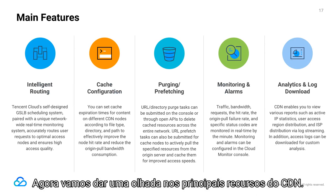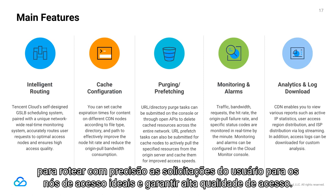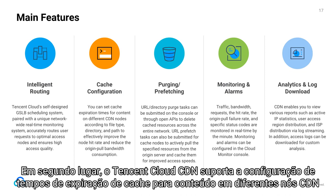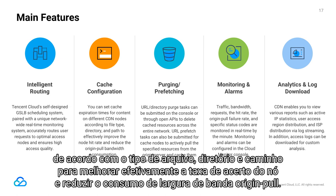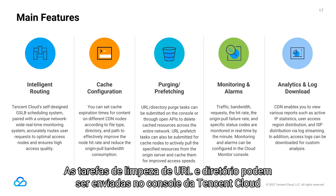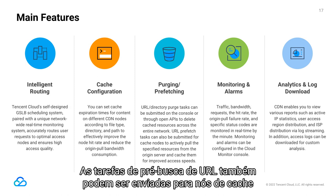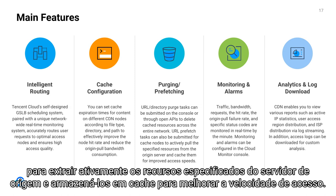Now let's take a look at the main features of CDN. First, Tencent Cloud CDN provides intelligent routing through its self-designed GSLB scheduling system and unique network-wide real-time monitoring system to accurately route user requests to optimal access nodes and ensure high access quality. Second, Tencent Cloud CDN supports configuring cache expiration times for content on different CDN nodes according to file type, directory, and path to effectively improve the node hit rate and reduce origin-pull bandwidth consumption. Third, Tencent Cloud CDN supports URL purging and prefetching.